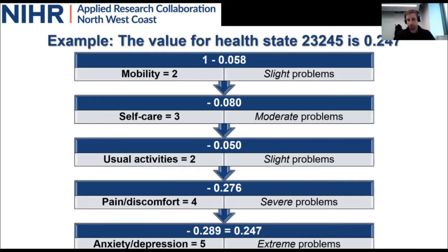To finalize — can you apply this number? So if you have approximately 0.25, and you believe that some treatment would give that person 10 more years in that state, that would be equivalent to 2.5 quality adjusted life years. Correct. Simply multiply the utility value — 0.247 — by the duration a person spends in that particular health state.